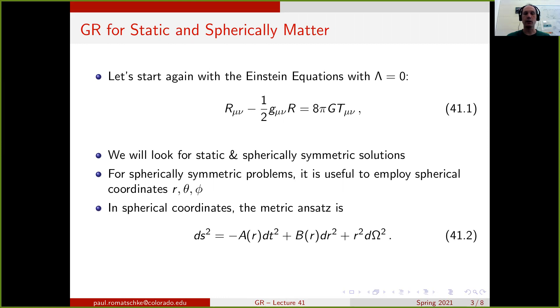In terms of this spherical coordinate, we want to make the metric ansatz such that the line element equals minus A of r dt squared plus B of r dr squared plus r squared d omega squared, where A of r and B of r are two arbitrary functions of the radius r. Note that this is the same metric ansatz that we used for the Schwarzschild solution.